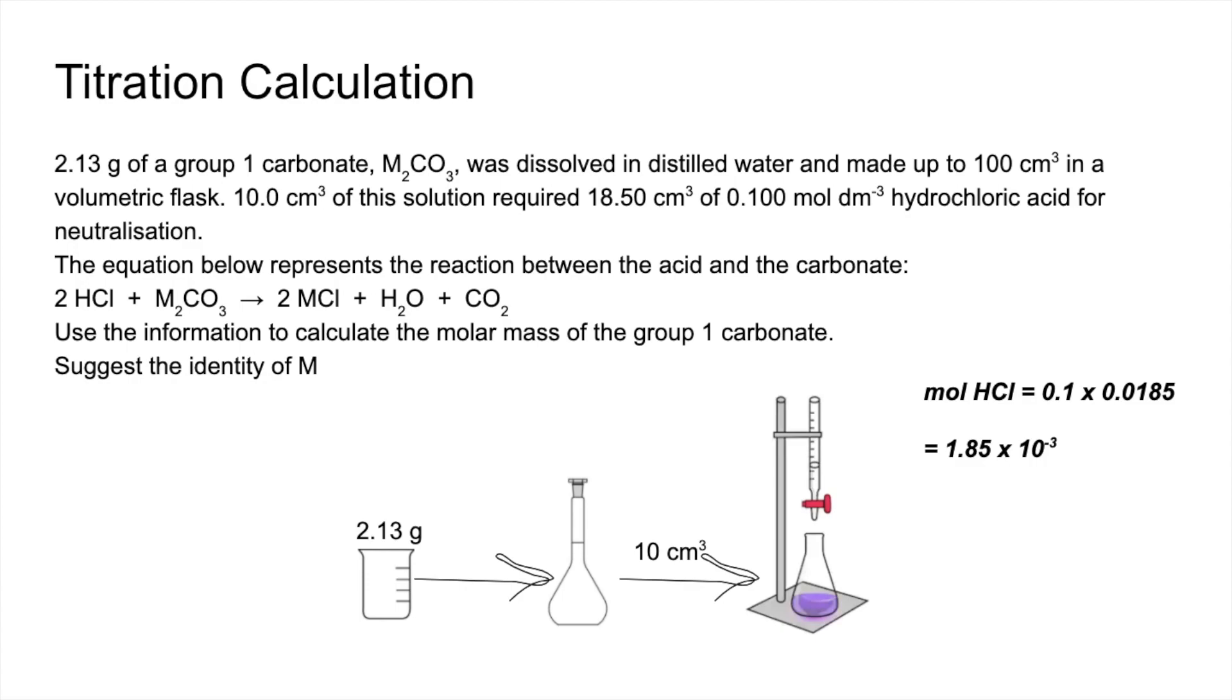The moles of the carbonate that must have been present for the titration is going to be half of that from the mole ratio in the balanced chemical equation. So that's 9.25 times 10⁻⁴.